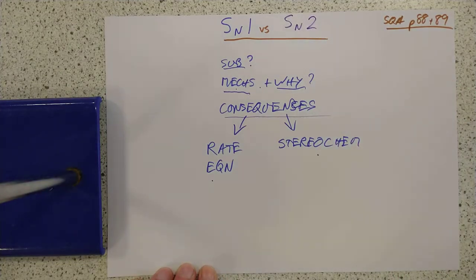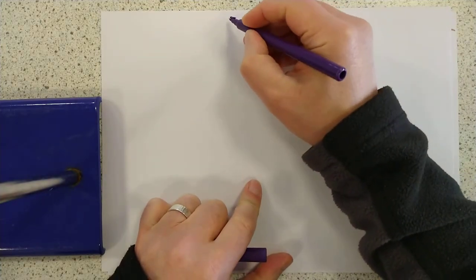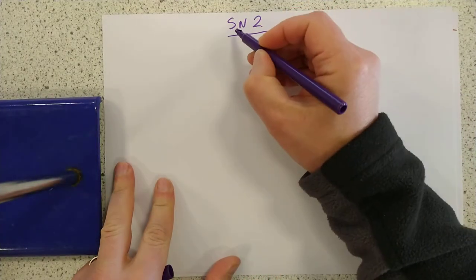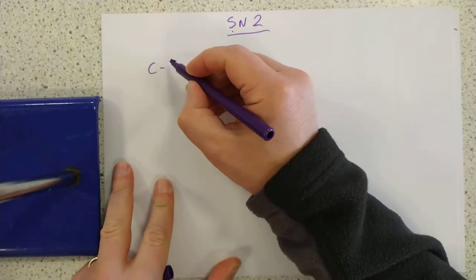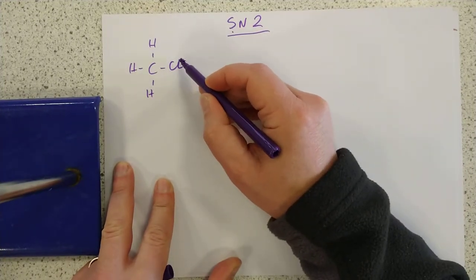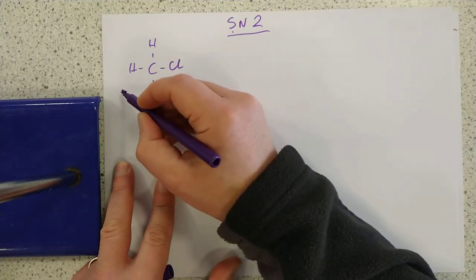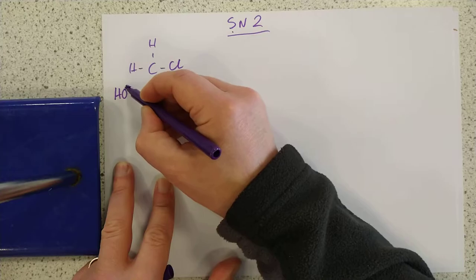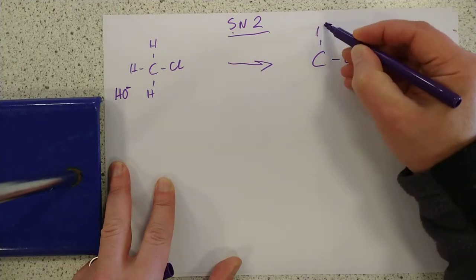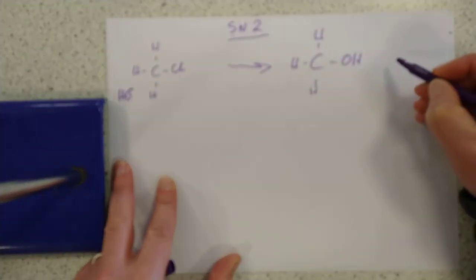We are going to start with SN2. So this is a substitution reaction. If we have, for example, chloromethane — something nice and simple — substitution means we're going to pull this chlorine off and substitute something else for it. The thing that we should substitute is a hydroxide ion. So if we do this reaction, we're going to make methanol and a free chloride ion.